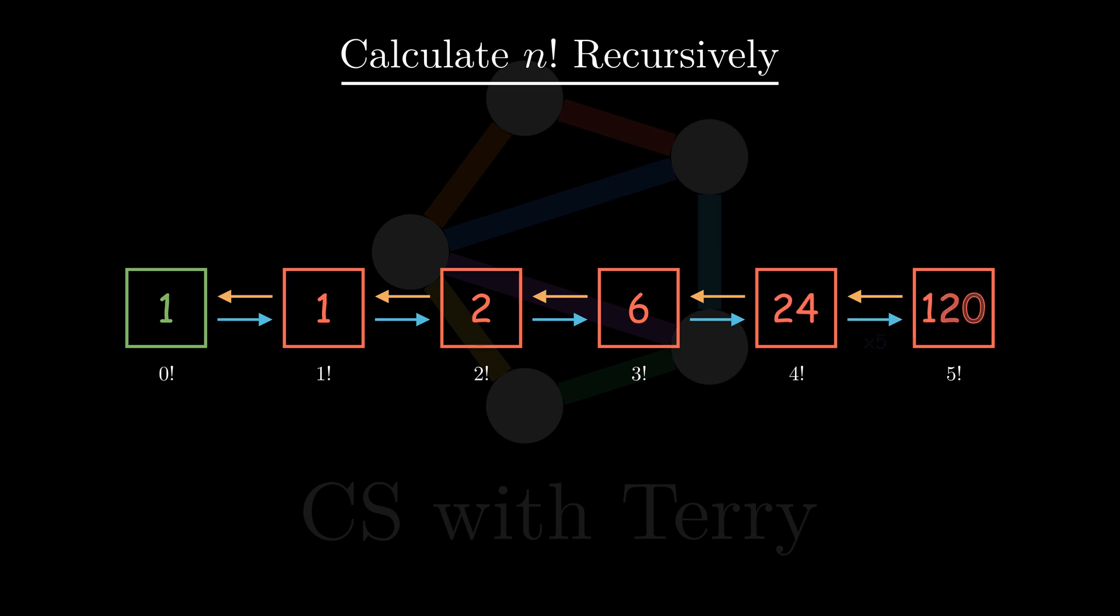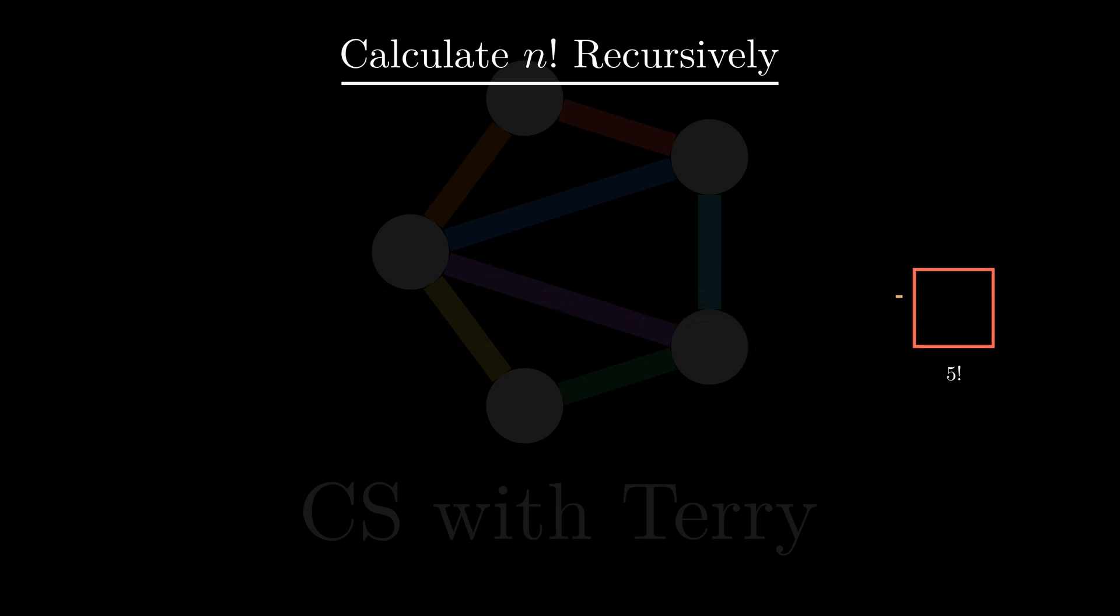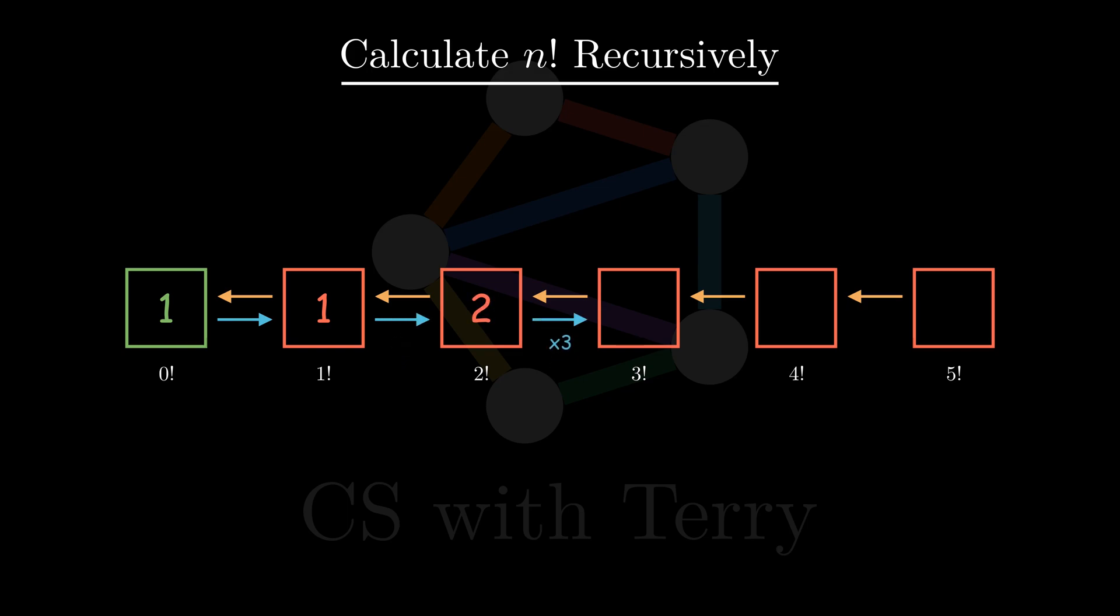This is the reverse thinking in recursion. We start from the final desired solution, find the solution to the smaller subproblem, and use it to construct the solution to the original problem. We keep doing this step by step, until reaching the base case, where the problem is simple enough. At this point, the recursive function starts to return and fills in the solutions for each of the previous layers in turn.